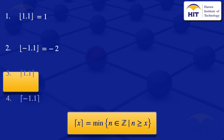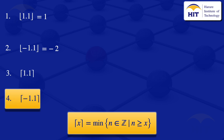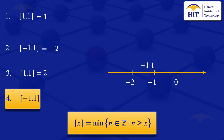Next we'll look at the ceiling value of minus 1.1. We can also use a number line to visualize this, starting from minus 2, minus 1, and 0. Then we can place minus 1.1 on the number line. The number directly to the right of minus 1.1 is equal to minus 1, so the ceiling value of minus 1.1 is equal to minus 1.